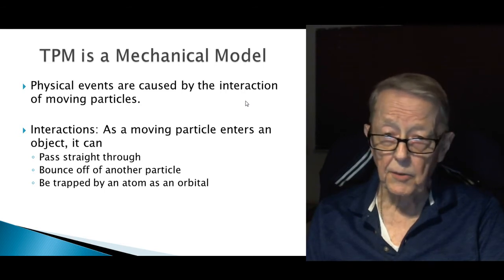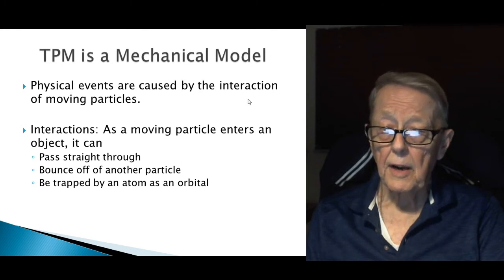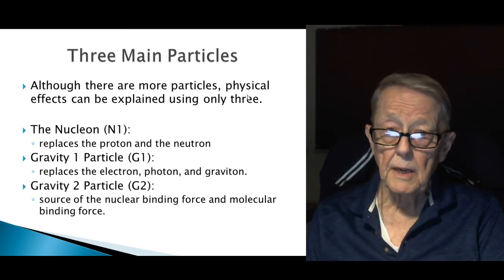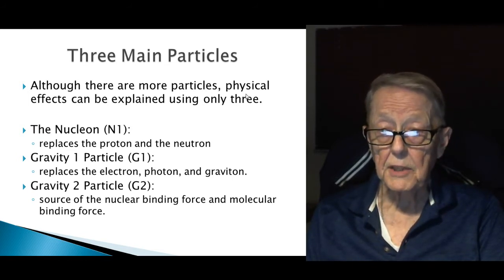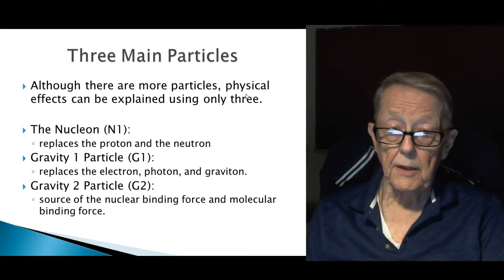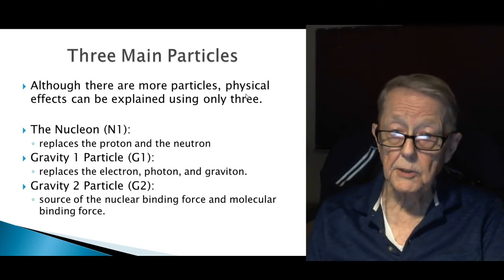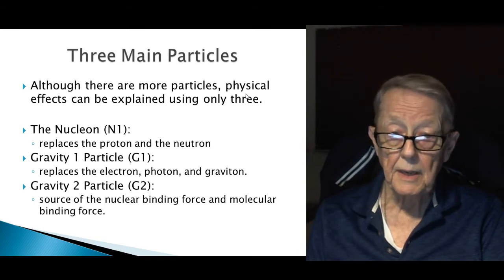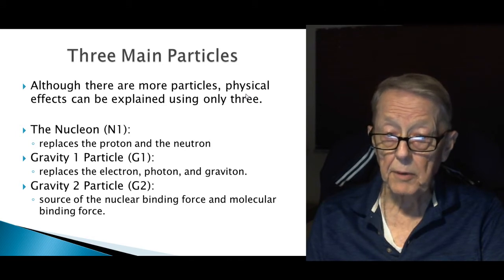And these three, whether it's electronic or whatever, I keep using these words to explain it. There are three main particles. Although there are more than that, obviously, the physical effects can be explained using only three. There's the nucleon, which I call the N1, which replaces the proton and the neutron and hence makes up the nucleus of an atom. There's the gravity one particle, we call the G1, and that replaces the electron, the photon, and the graviton.